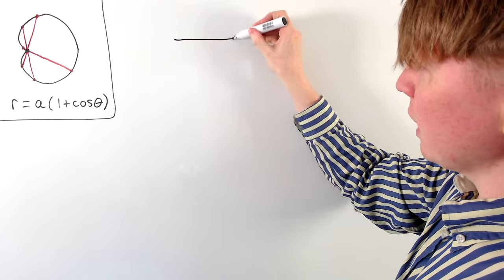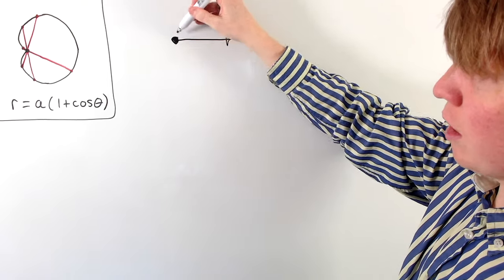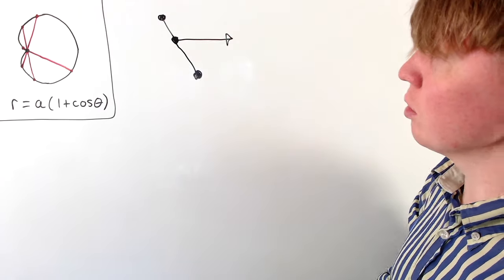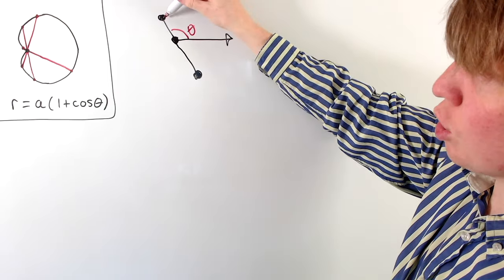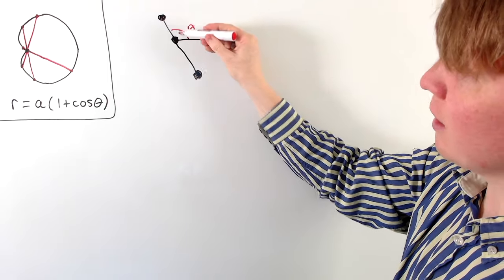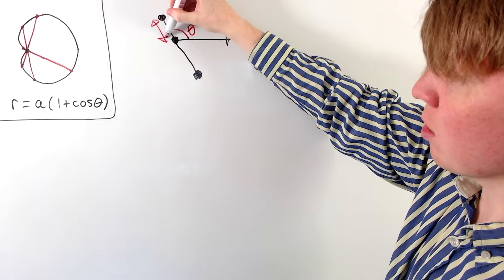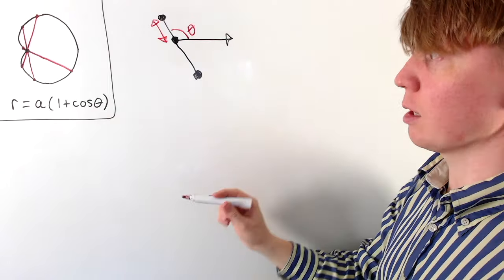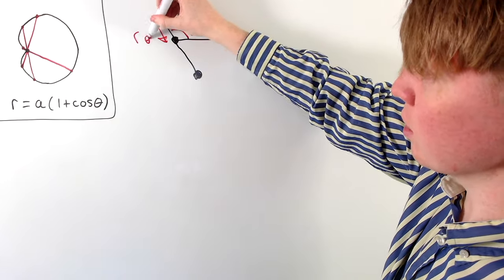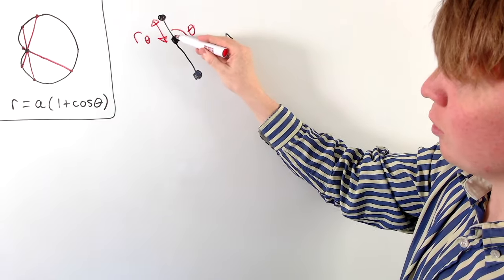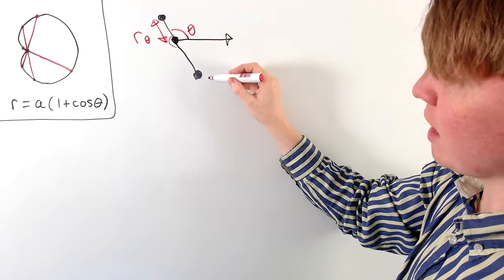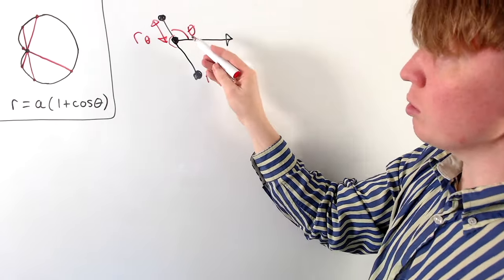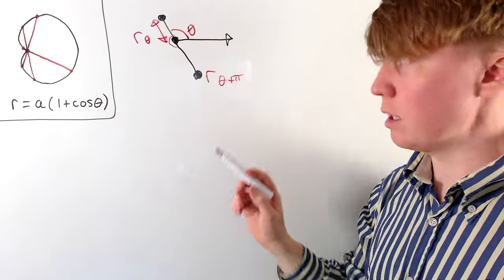To calculate the length, imagine we have the origin and a chord like this one. We add in the angle theta going around to the top point on our cardioid, and the distance from the origin to that point is R equals A times one plus cos theta — we just call this R(θ). Then we go around another half turn to the other end, so that distance is R(θ + π), using the equation with angle theta plus pi.